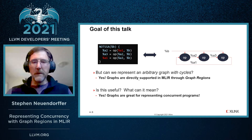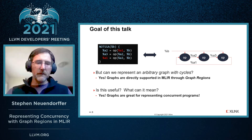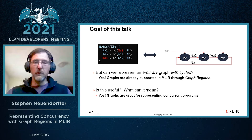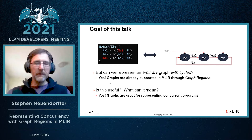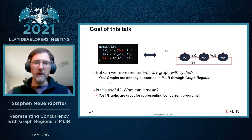Graphs are directly supported in MLIR through a concept called a graph region. The second question is, well, is this useful? What can it mean? And I hope by the end of this talk, I'll convince you that yes, graphs are actually very useful, and they're great for representing concurrent programs.